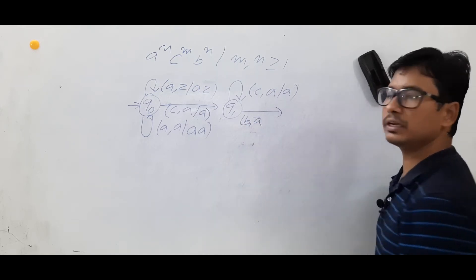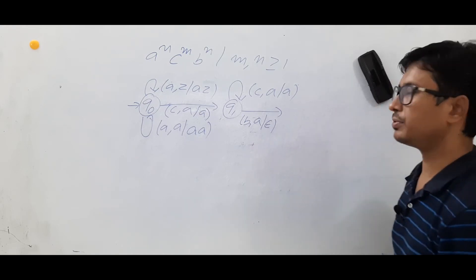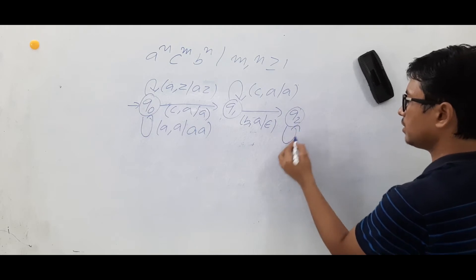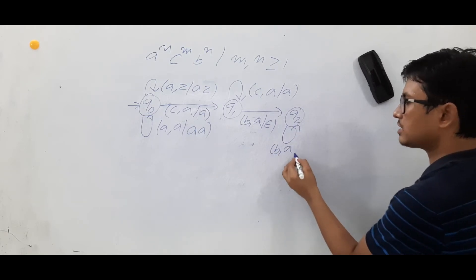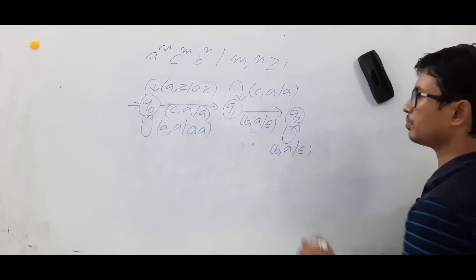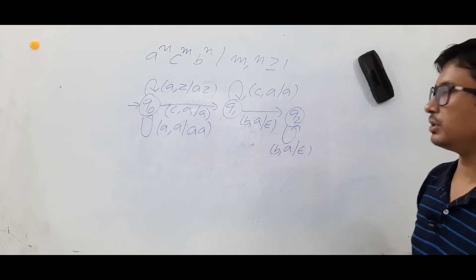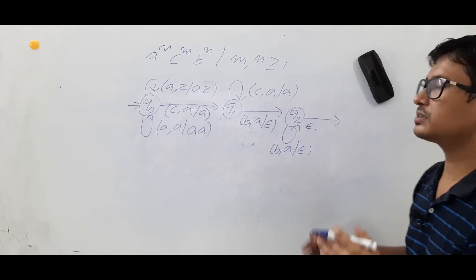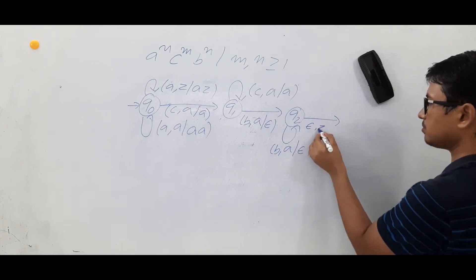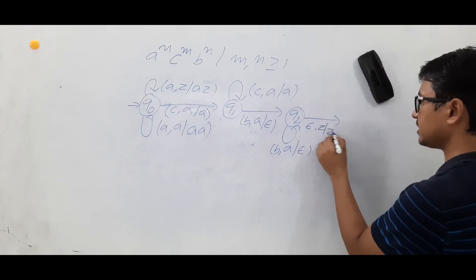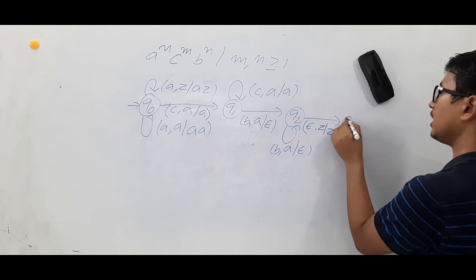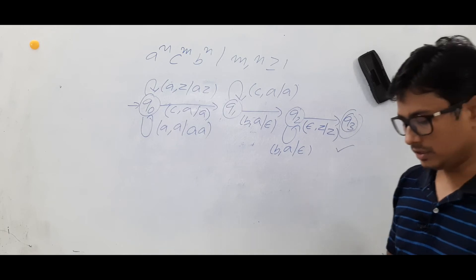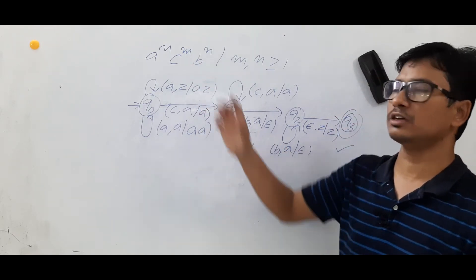Then if I see 'b' with stack symbol 'a', I start performing the pop operation and go to state q2. In q2, if I see any b's with stack symbol 'a', I perform the pop operation. At last, if I see epsilon and the stack symbol is Z, I keep it as Z and reach the final state. This is the pushdown automata for this example.